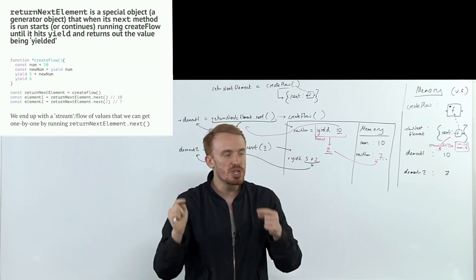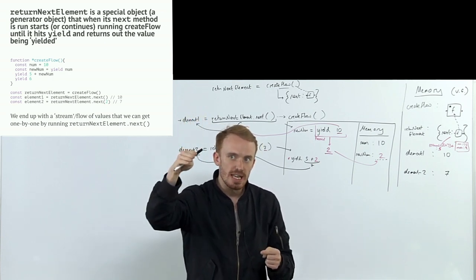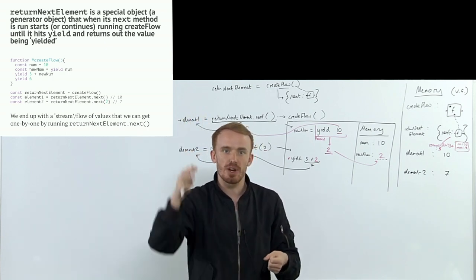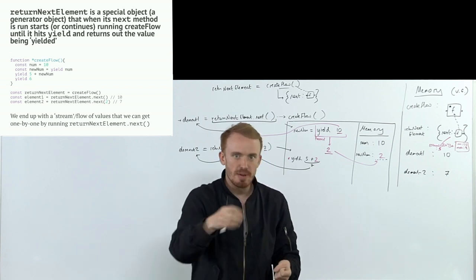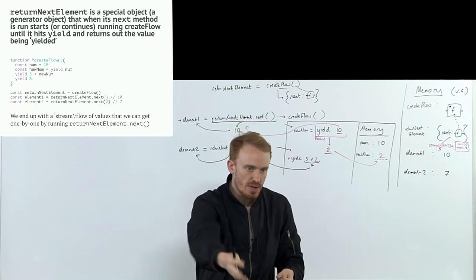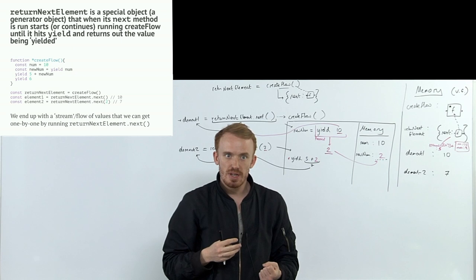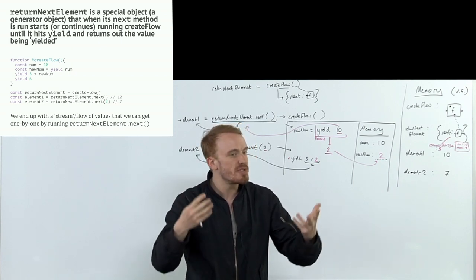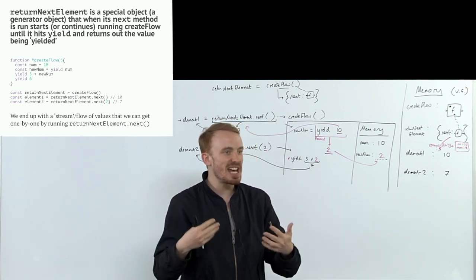And those flows - those functions that give us the next element from the flow are known as iterators. Anything that gives us a flow element by element is technically known as an iterator, but I prefer to think of it as being a flow of elements that we just grab one by one by running a function. Here we're producing that flow by running through a function, hitting a yield statement, giving that as the next element of the flow. Continue, yield statement, next element of the flow. Go back in, continue, yield statement, next element of the flow.